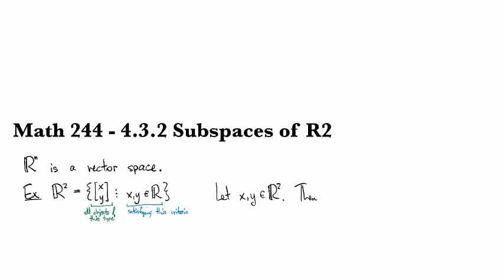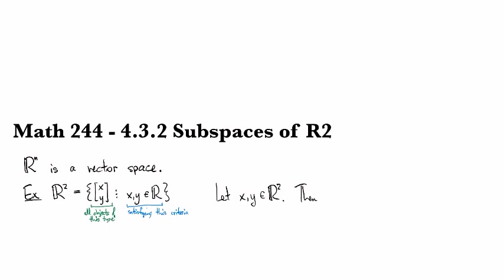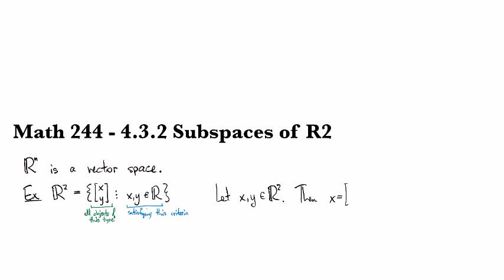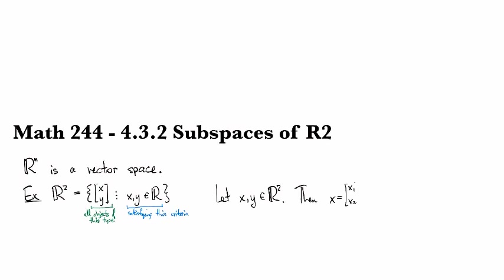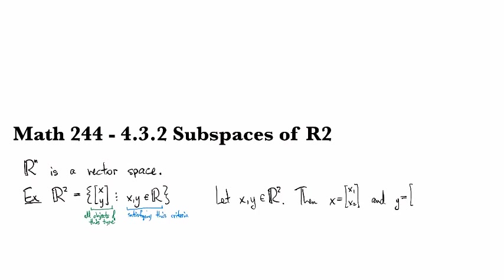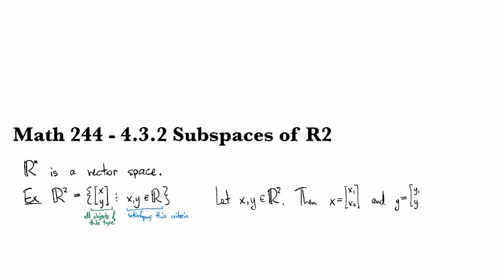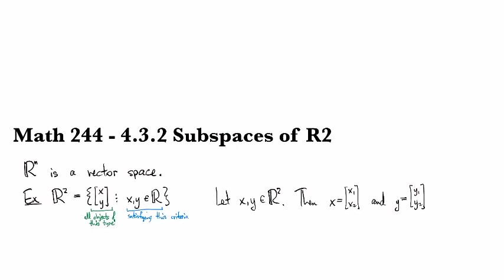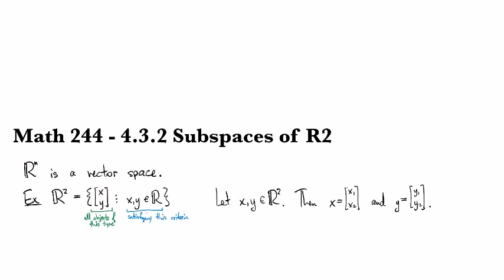What do we know then? Well, then by our definition of R2, we know that x is a vector of length 2. And we know that y is a vector of length 2. And what are those entries? Well, I don't know, but I know they're real numbers. So that's fine.